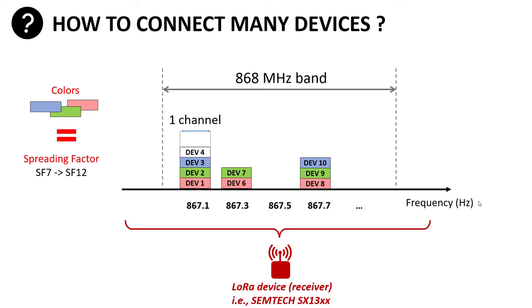With six spreading factors and eight channels, that's 48 devices connected together. But 48 is obviously not enough — we're talking thousands. The last trick is simply to respect the 1% duty cycle in the European band: transmit for 1, stay quiet for 99, which increases network capacity by 100. So we now have thousands of devices capable of transmitting together.